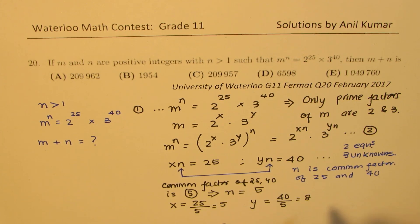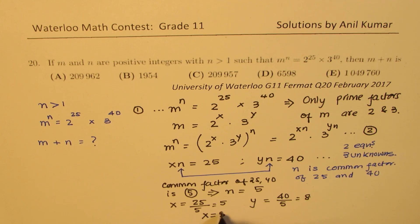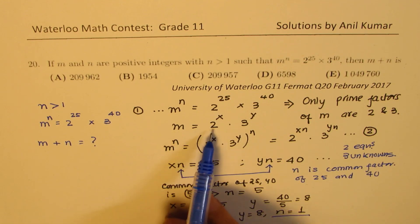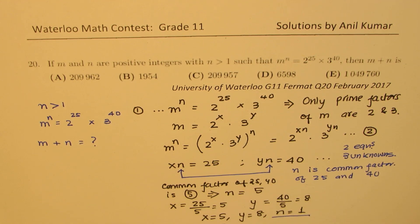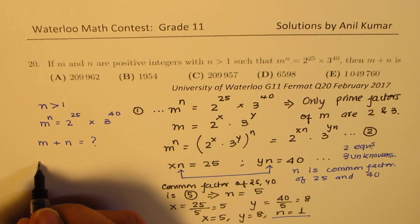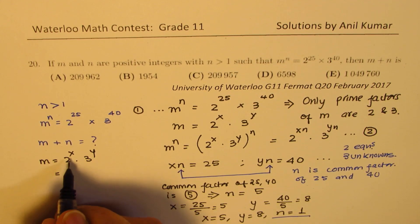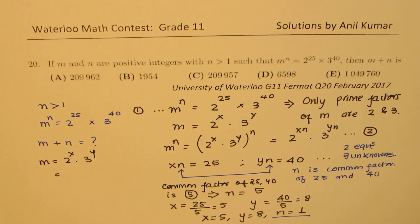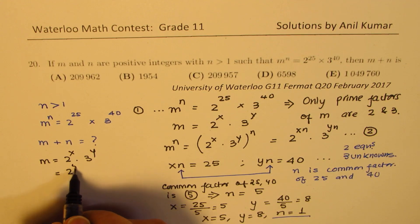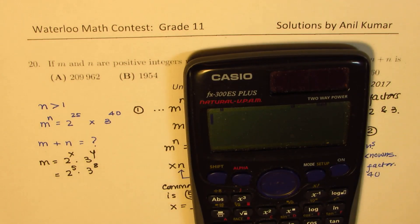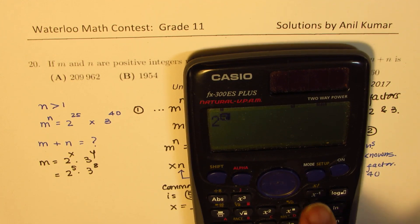Perfect. Now we can actually get our results. So what we know from here is that x is equal to 5, y is equal to 8, and n is equal to 5. And m plus n. M is 2^x times 3^y. So we'll calculate what m is now. So m is 2^5 times 3^8. We know the value of x and y now. So it is 2^5 times 3^8. Let's use calculator to figure this out. So we have 2^5 times 3^8, and that is 209952.